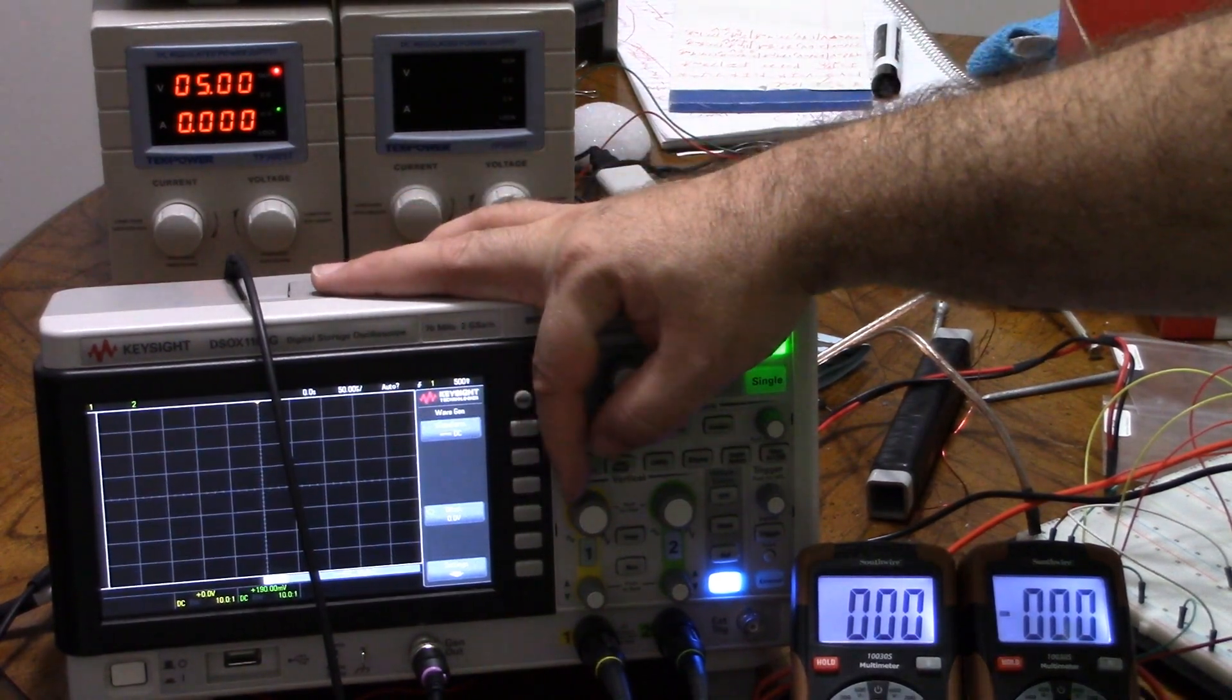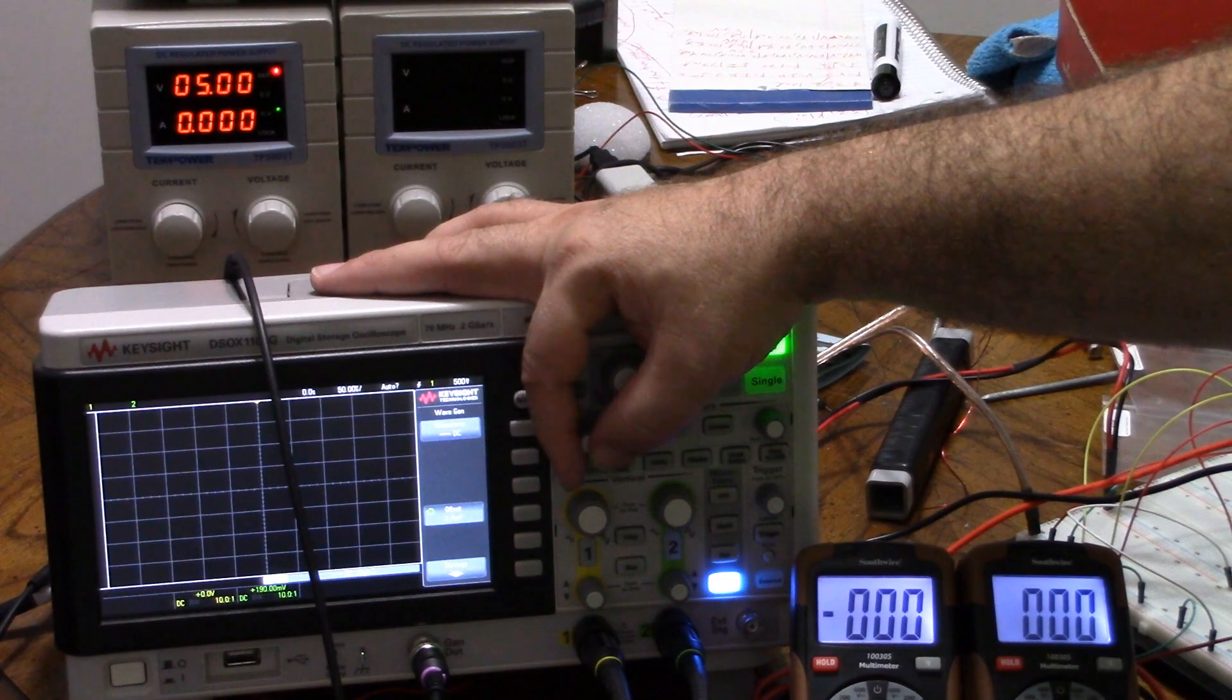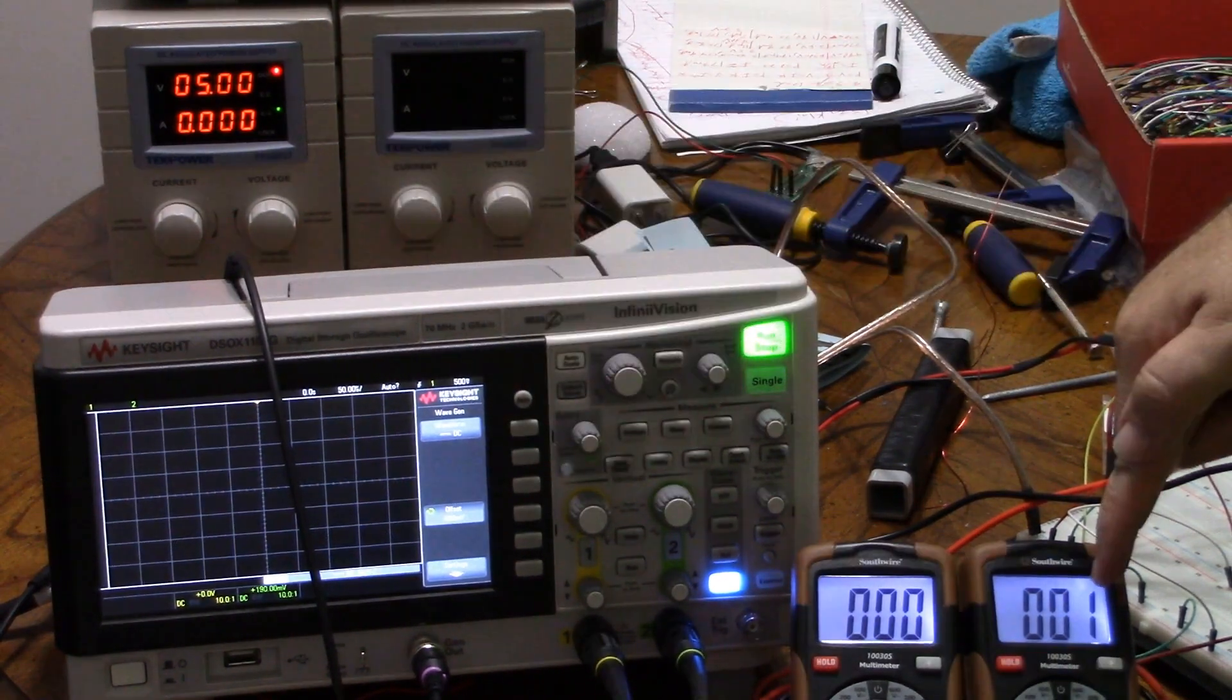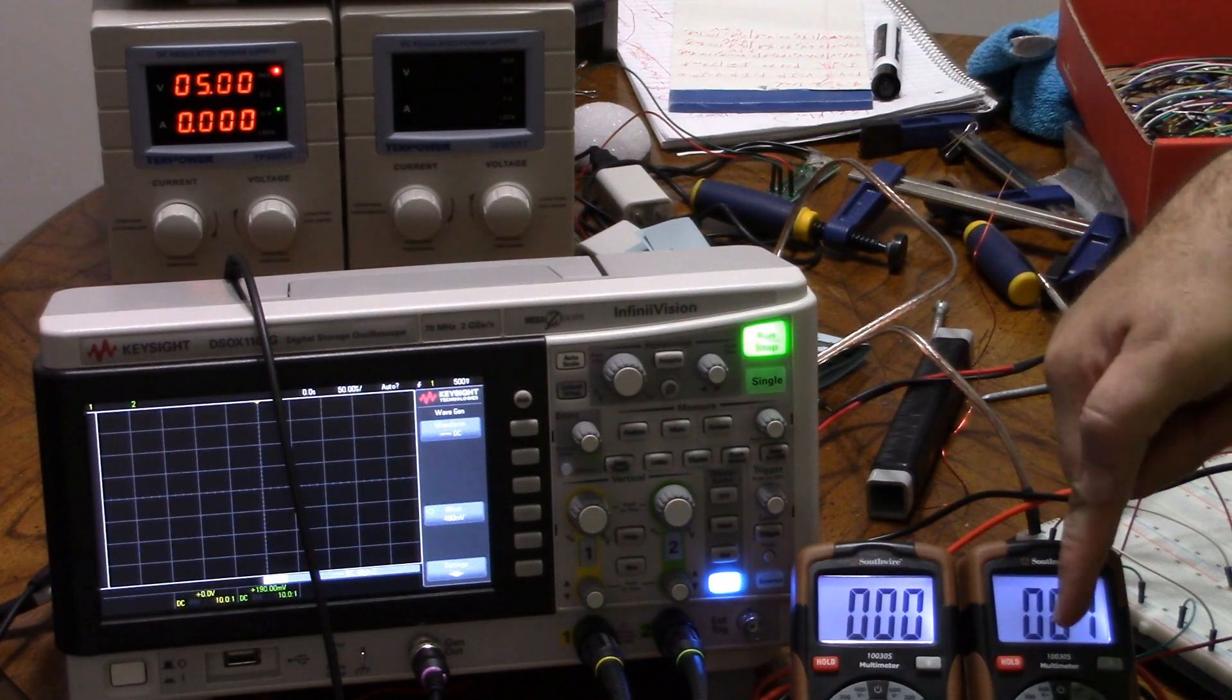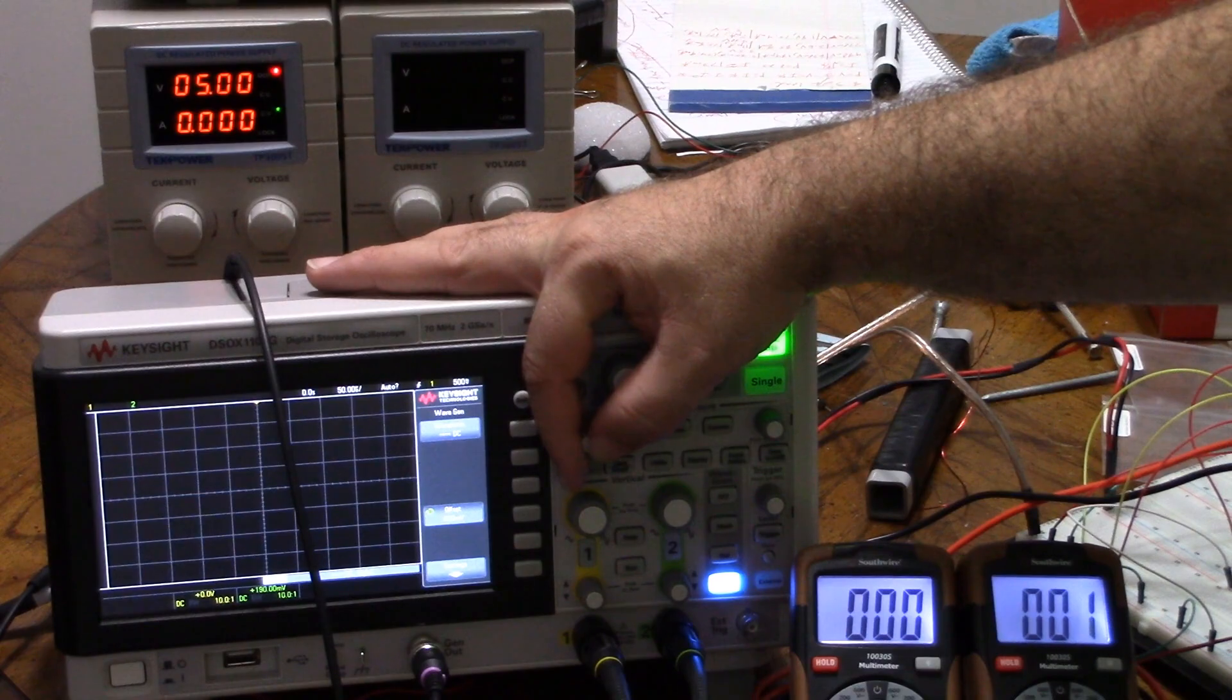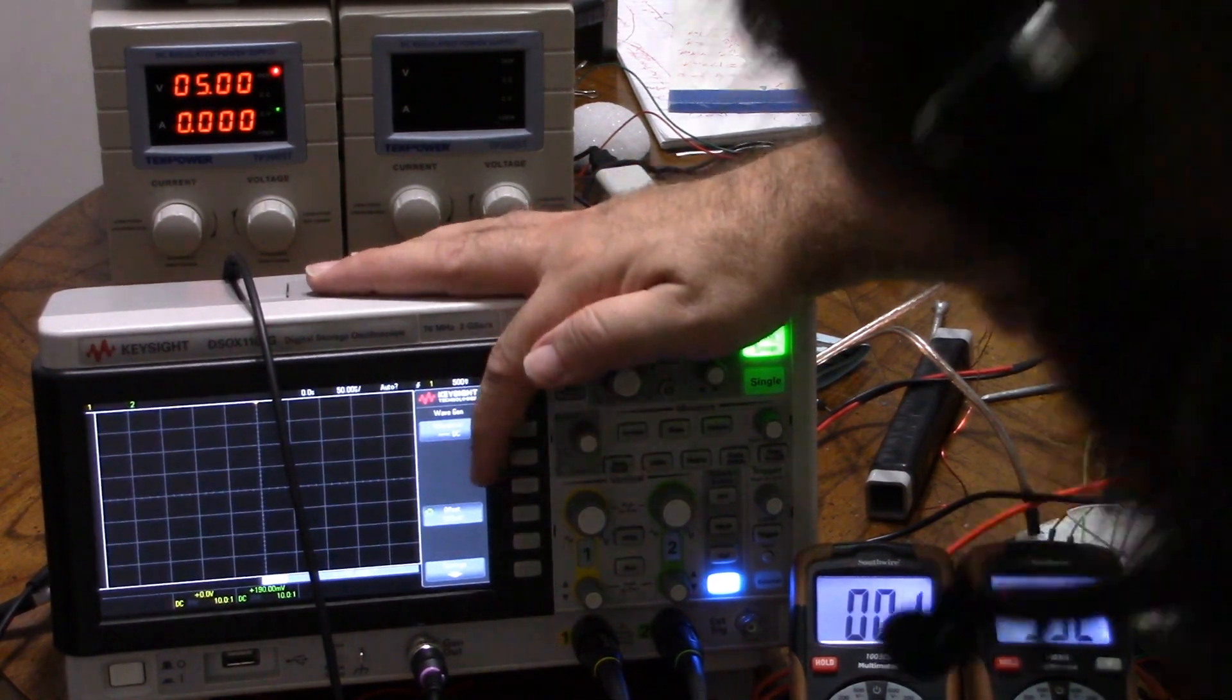I will turn the signal up until I begin to see some load current. Keep going. Okay, there we go. So now I'll turn it down. And we see about 1 microamp through the load. It's leaking. We're at about 480 millivolts. If I keep turning it up until I see base current, we get it about there. So this is about 690 millivolts. I've got 532 microamps.